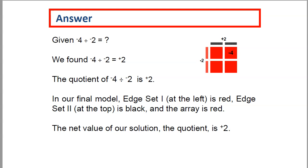In our final model, edge set 1 at the left is red, edge set 2 at the top is black, and the array is red. The net value of our solution, the quotient, is positive 2.